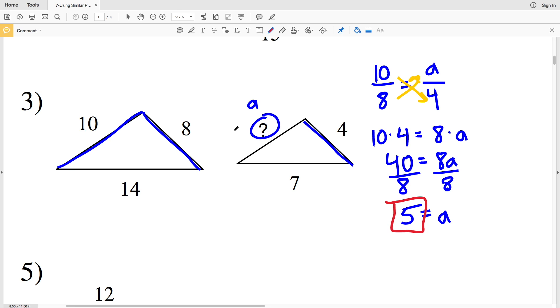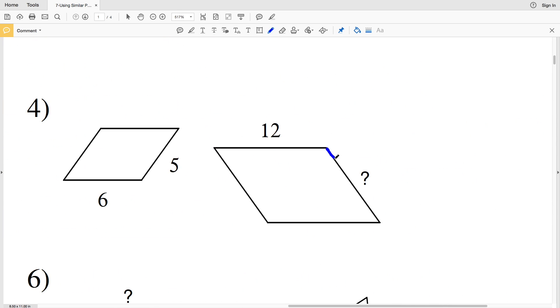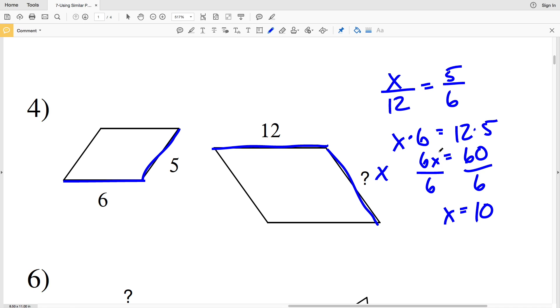In number four, our missing length—let's call this X—corresponds to 5, and 12 corresponds to 6. So we'll write X over 12 equal to 5 over 6. When we cross multiply, X times 6 equals 12 times 5, so 6X equals 60. And when I divide by 6, I get that X is equal to 10, so 10 is the missing side length in number 4.